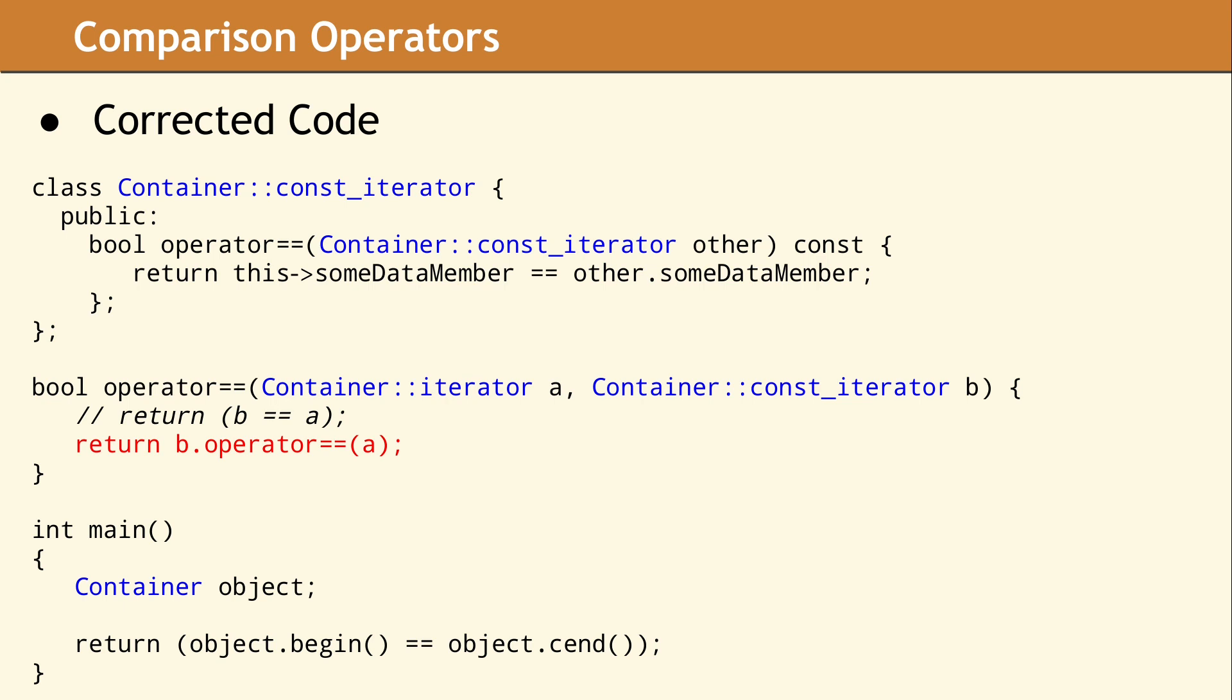Once we understood what was happening, the process of correcting our code involved changing one line, which is shown here in red. We modified the function to use method call syntax instead of algebraic syntax. Now the C++20 compiler must invoke our class method, because that is what the code says. The compiler cannot rewrite this call since it is no longer using the syntax for an overloaded comparison operator. Our code is better, and it works with C++17 and C++20.